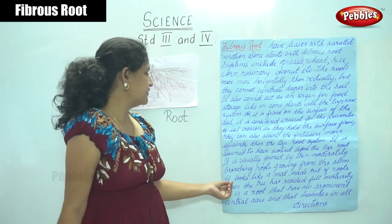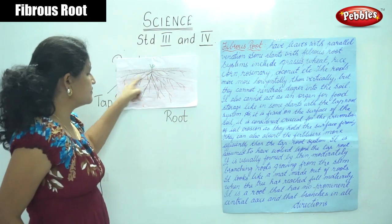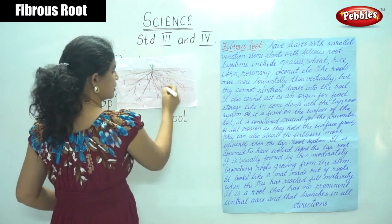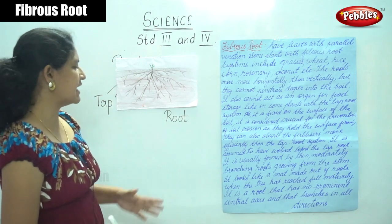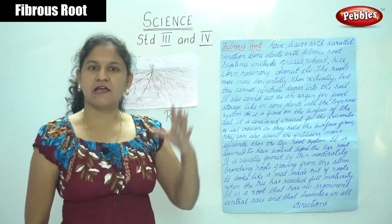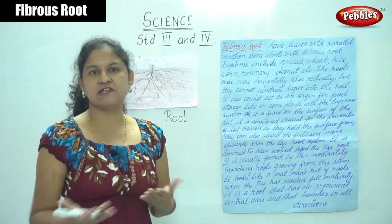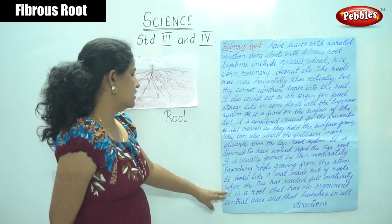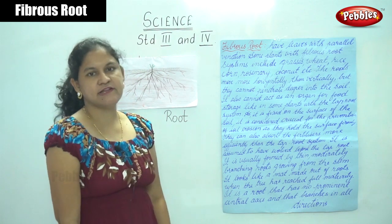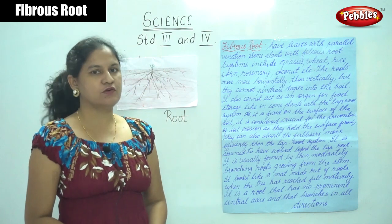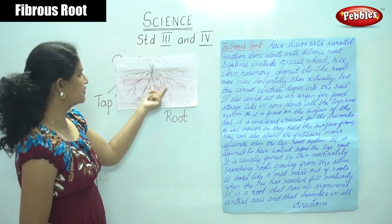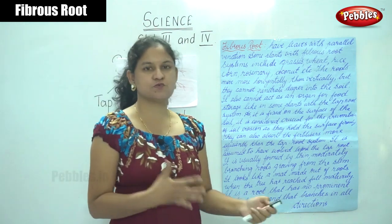The fibrous root is usually formed by thin, moderately branching roots growing from the stem, and it looks like a mat made out of roots when the tree has reached full maturity. It is a root that has no prominent central axis and branches in all directions. In comparison, a tap root has one thick root that goes deep into the ground, but a fibrous root branches in all directions without a central axis.